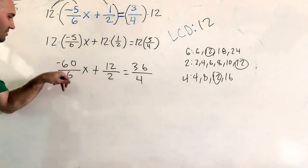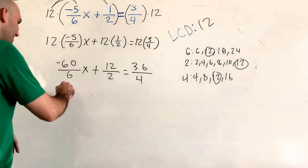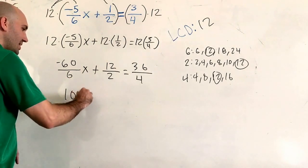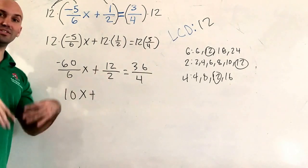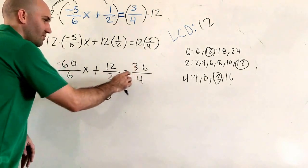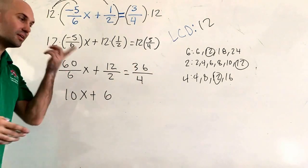Now do you notice something? That negative 60 divided by 6 is just 10. So we got negative 10x. 12 divided by 2 is just 6. And 36 divided by 4 is just 9.